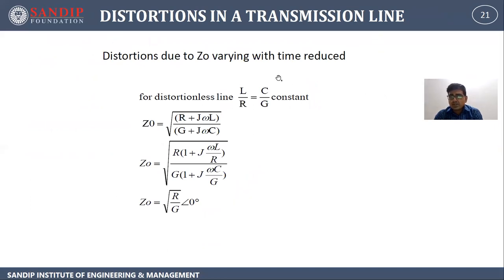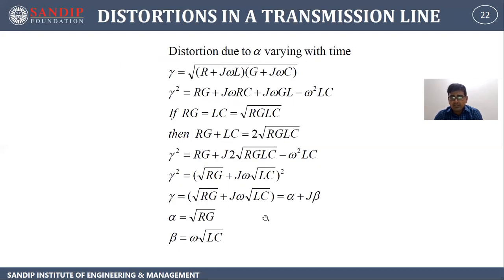Distortions due to Z₀ varying with frequency are reduced for a distortionless line where L/R = C/G (constant). So Z₀ = √[(R + jωL)/(G + jωC)], taking R common from numerator and G from denominator gives Z₀ = √(R/G) at angle 0°. For distortions due to alpha: squaring gamma gives γ² = RG + jω(RC + GL) − ω²LC. If RC = GL (i.e., L/R = C/G), then α = √(RG) and β = ω√(LC).